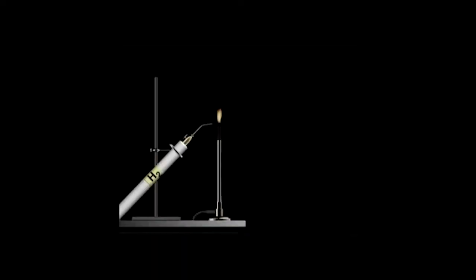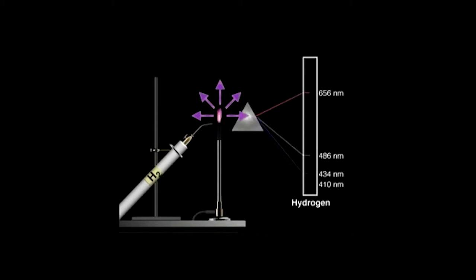If a sample of hydrogen gas is heated, it gives off light. When you view this light through a prism, you'll see an emission spectrum consisting of bright lines at specific frequencies. Because the spectral lines come at definite intervals, this suggests that specific energy levels exist in the atom.